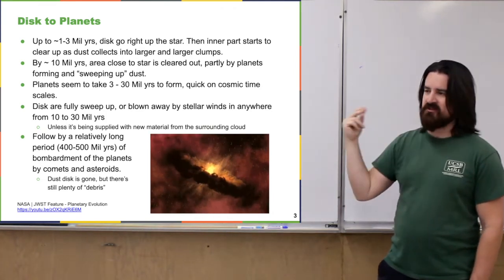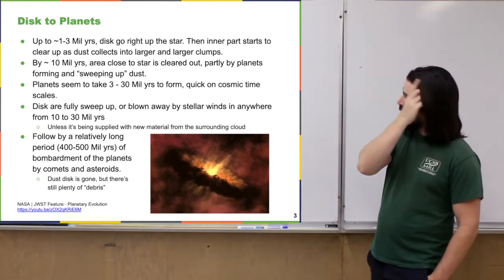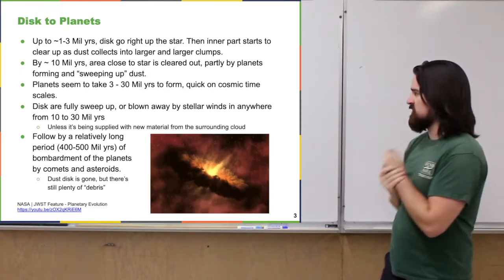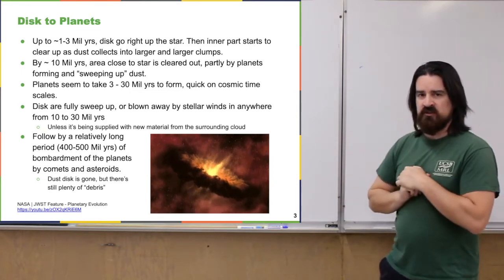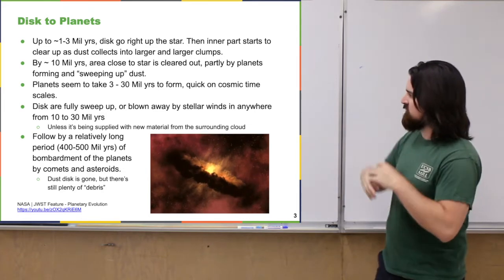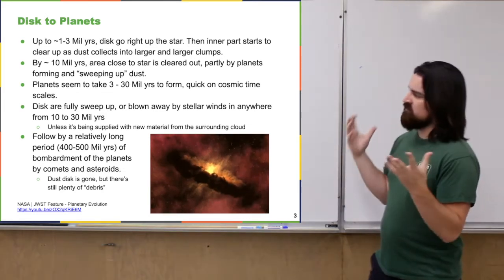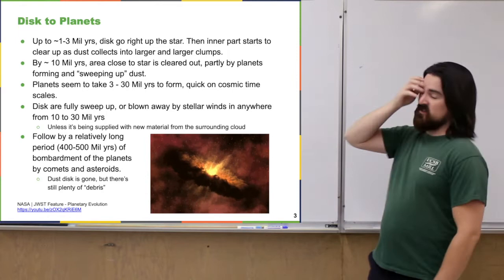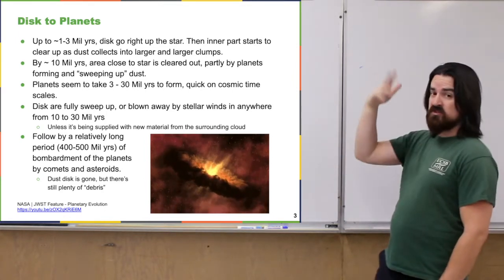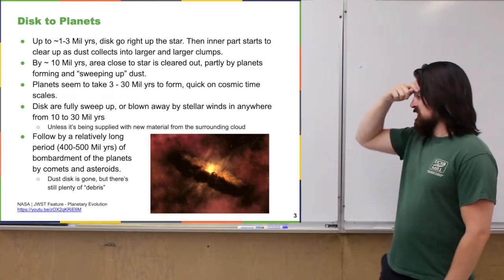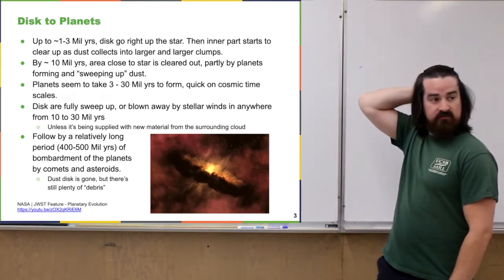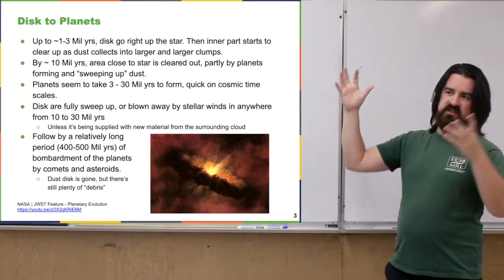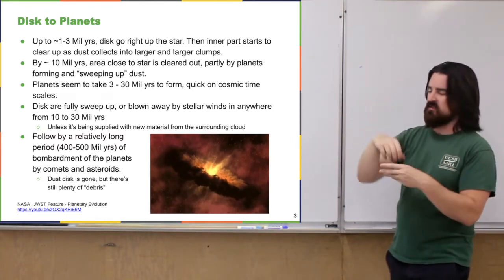Three to 30 million years is essentially nothing on cosmic timescales. After that, the rest of the disk is swept up by the forming planets or blown away by stellar winds once nuclear fusion begins. That all clears the remaining dust by about 10 to 30 million years — which is probably why planets don't form much longer than that, because there's no more material laying around. Unless the star is pulling in more material or the system is still within a molecular cloud.